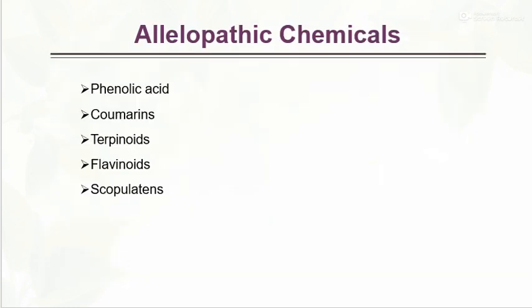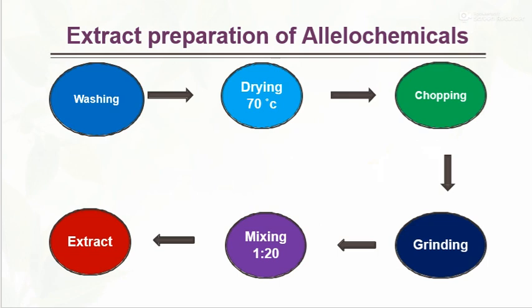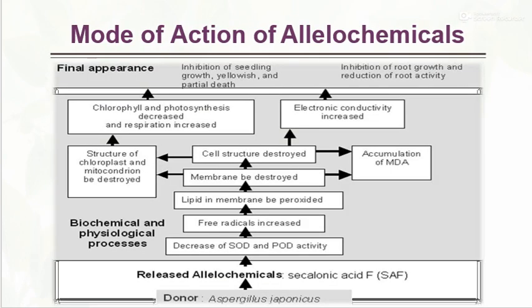Next, allelopathic chemicals. The chemicals involved in allelopathic effects include phenolic acid, coumarins, terpenoids, flavonoids, and scopulatins. These are the chemicals responsible for the allelopathic effect.